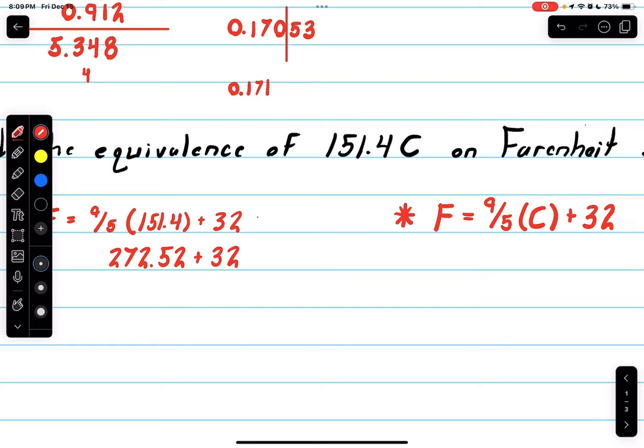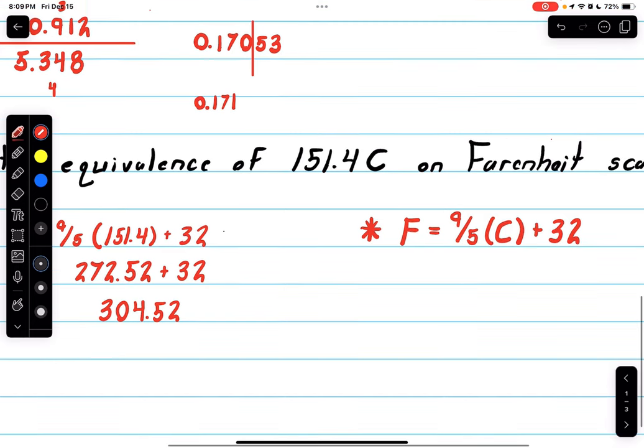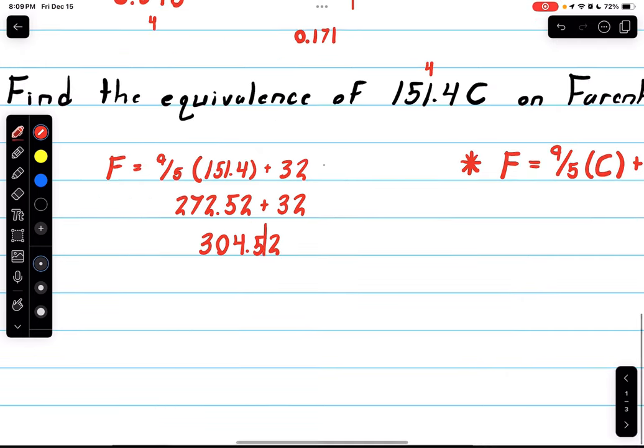Plus the 32, I get 304.52. The thing I've always taken away from this class is however many sig figs we start with—since we have four here—that's how much we'll end with. Since the 2 cannot be rounded up, we end up with 304.5 Fahrenheit.